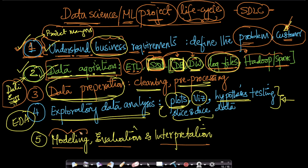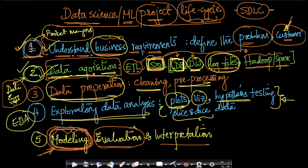The next step is modeling, evaluation, and interpretation. All of your classification, regression, deep learning, and clustering models fall into just this one part of the life cycle. I see many machine learning engineers focusing too much on modeling and skipping other pieces of the puzzle. Evaluation involves defining the KPI and performance metric and connecting it to business requirements. Model interpretation — such as feature importance — is especially critical in business-critical situations.